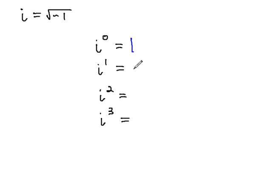i to the first is nothing special. We can just ignore that exponent and write it as i, but i squared is going to take the square root and square it. With square and square root being inverses, all that's going to be left is the negative 1 that is inside the radical. For this reason, i squared is negative 1, and this is probably the most important exponent that we know and recognize on i.